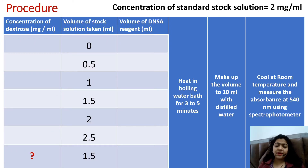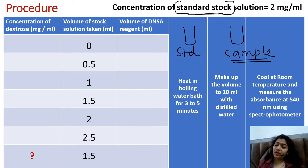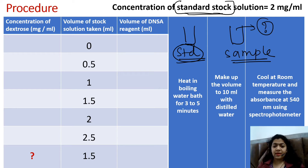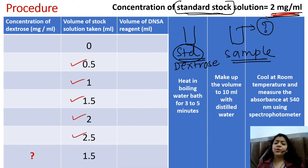Now this is the procedure, kept in tabular form. I have two solutions: one standard solution and one sample solution. I know that the standard dextrose solution has a concentration of 2 mg per ml. From this 2 mg per ml stock, I am withdrawing 0.5 ml, 1 ml, 1.5 ml, 2 ml, and 2.5 ml into five different test tubes. In each test tube, whatever volume is stated in the table, that is taken from the standard solution.